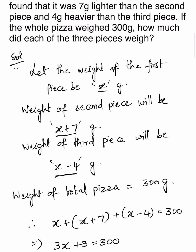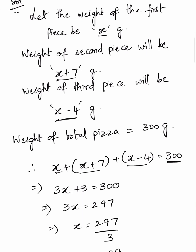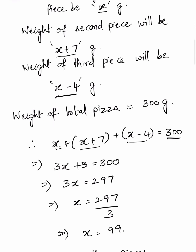Adding all three weights: x plus (x plus 7) plus (x minus 4) equals 300 grams, as given in the question. Therefore, 3x plus 7 minus 4 equals 300, which simplifies to 3x plus 3 equals 300. So 3x equals 297.